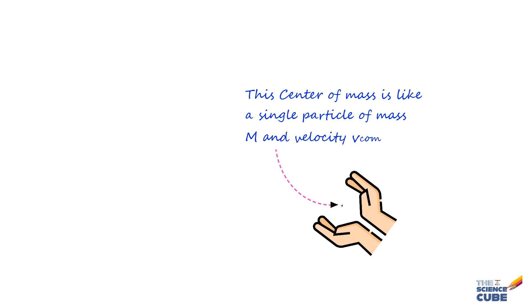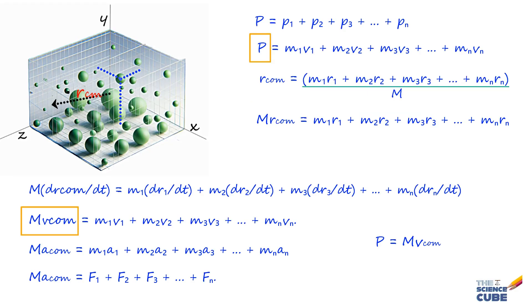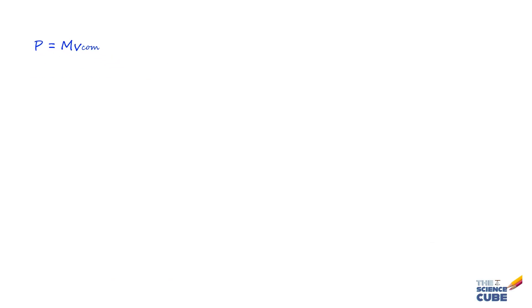This helps us to understand the idea of representing an extended body as a particle. Let us now take the time derivative of this equation and what we get is dP/dT = M·dV_com/dT, which equals M·A_com.